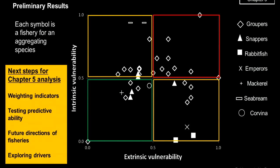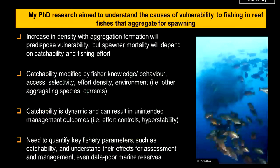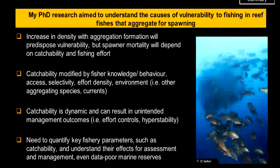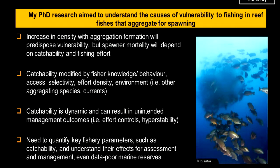My PhD research aims to understand the causes of vulnerability in aggregated species. An increase in density does predispose vulnerability, but actual mortality depends ultimately on catchability and fishing effort. Catchability is modified by fisher knowledge, behavior, access to gears or habitat, gear selectivity, density of fishers at spawning aggregations, and environmental factors such as other aggregated species or currents. Catchability is dynamic and can result in unintended management outcomes, as seen with fishing effort controls and hyperstability. There is a need to quantify these key fishery parameters for assessment and management — even marine reserves are very sensitive to what's happening with catchability for these species.